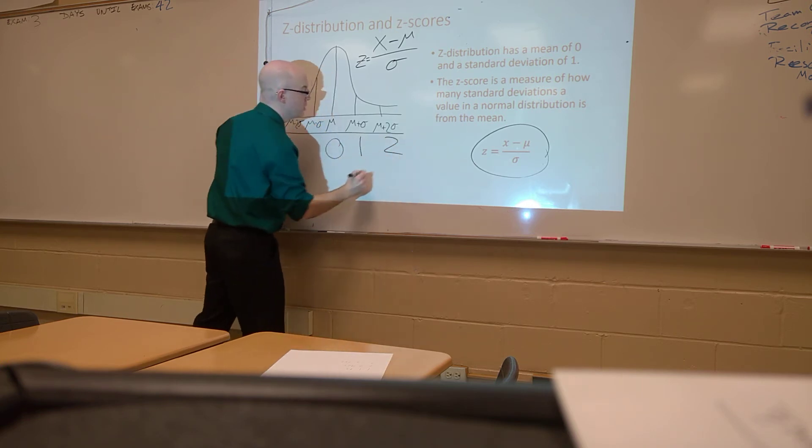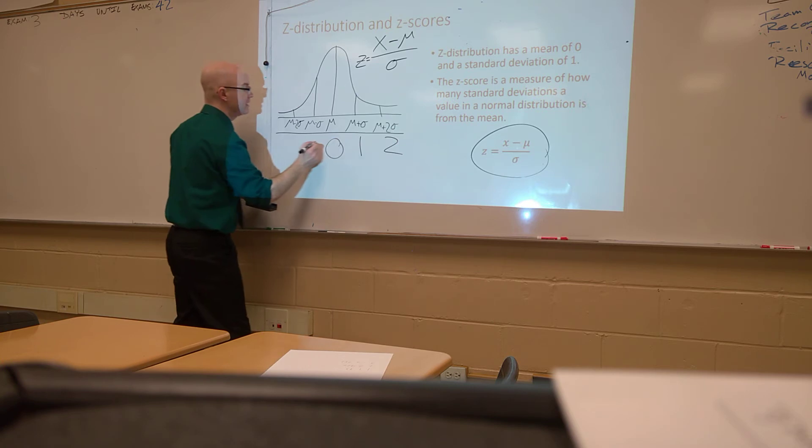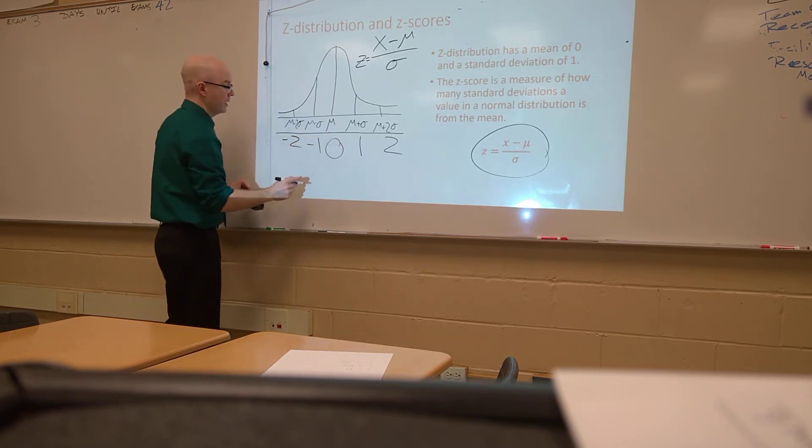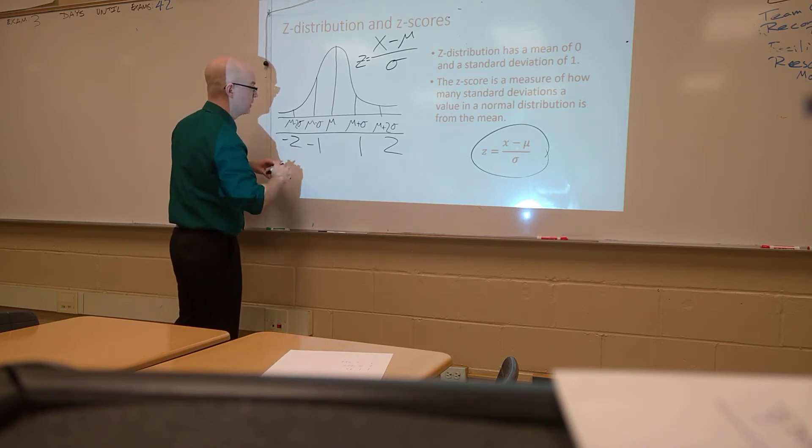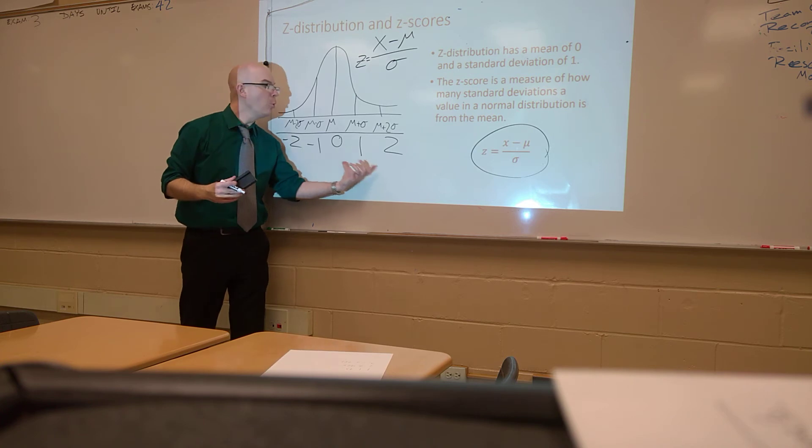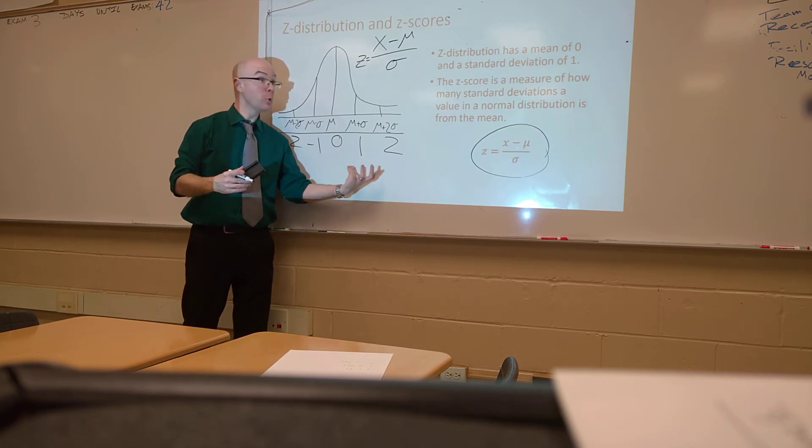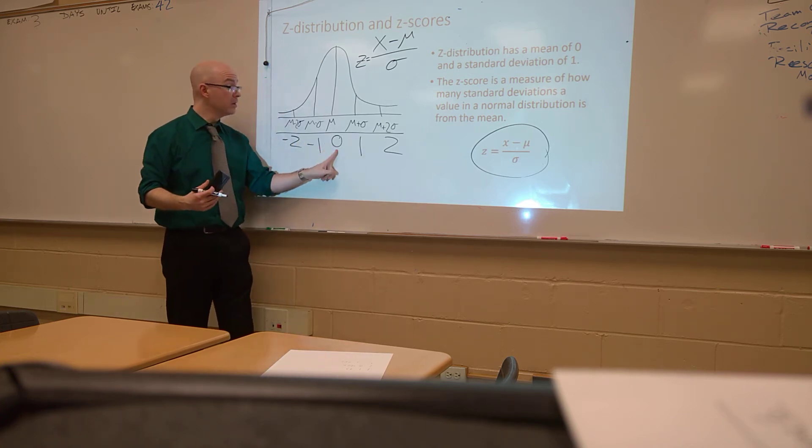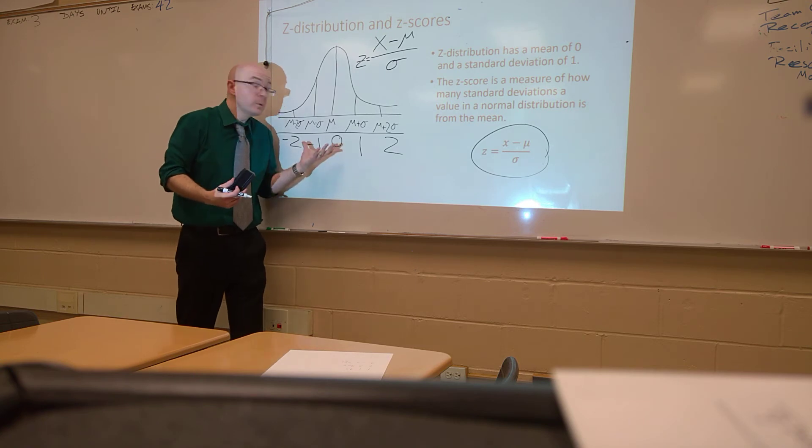If I put in here the value for one standard deviation away, I'm going to see that this is going to become 1. This becomes 2. If I went further, I'd see 3. Over here, this becomes a negative 1, a negative 2. These are all measures of how many standard deviations you are away from the mean. The mean is 0 standard deviations away, so it's 0.